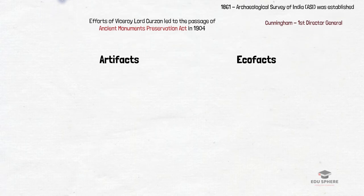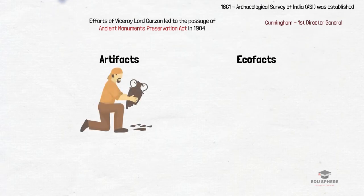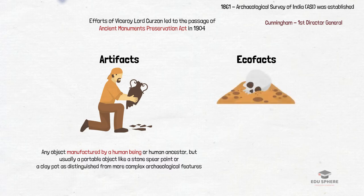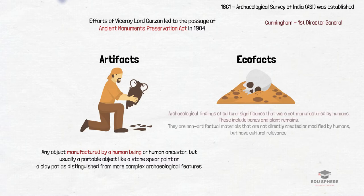Artifacts are portable objects which are made or altered by humans. They provide important evidence such as the process of their production, the raw material out of which they are made, the technology involved in their production, the use of objects, and other things. There is another kind of evidence which is non-artifactual — these are known as Ecofacts.